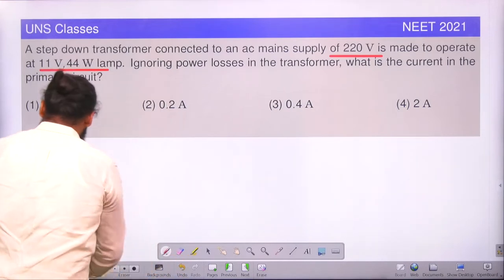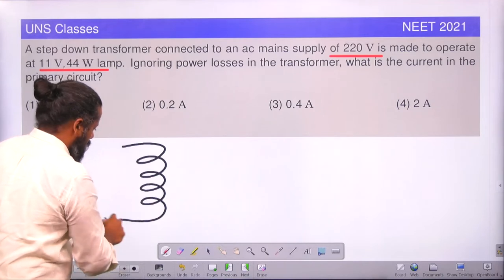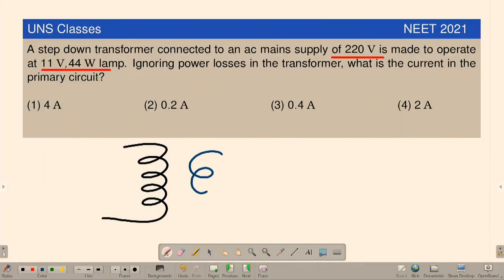Look here. So transformer looks like this. We have primary and secondary. It is a secondary coil, and we have core in between. This is a simple representation of a transformer.